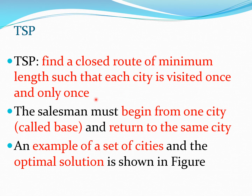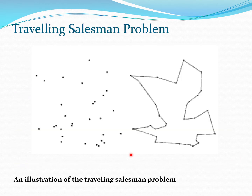Visiting each city once and only once is a particularly important aspect of this problem. The salesman begins from one city — the starting city is known as the base city — and then returns to that same city. There are many examples of this problem and it becomes progressively complex as the number of cities grows. In this figure you can see a scattering of cities, and the salesman has to go from one city to the next and finally end up back in the same city he started from.